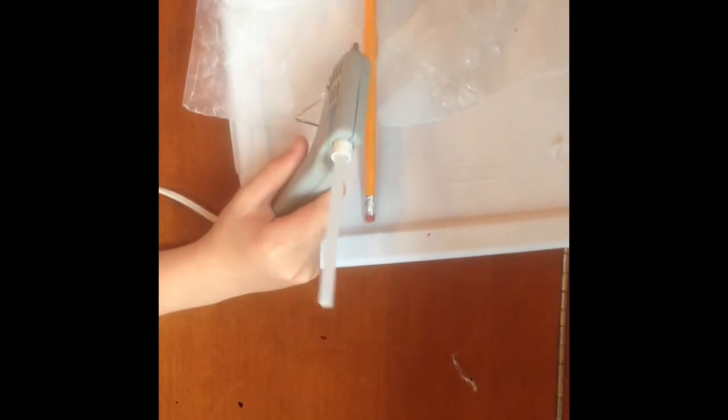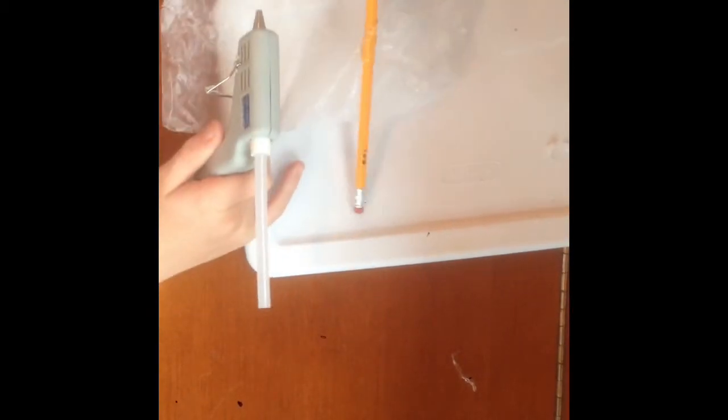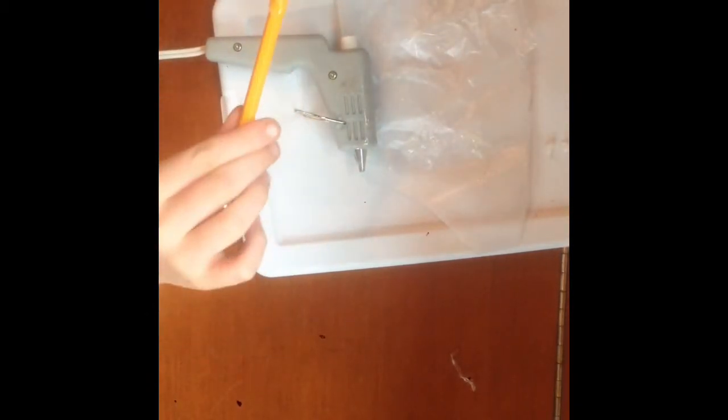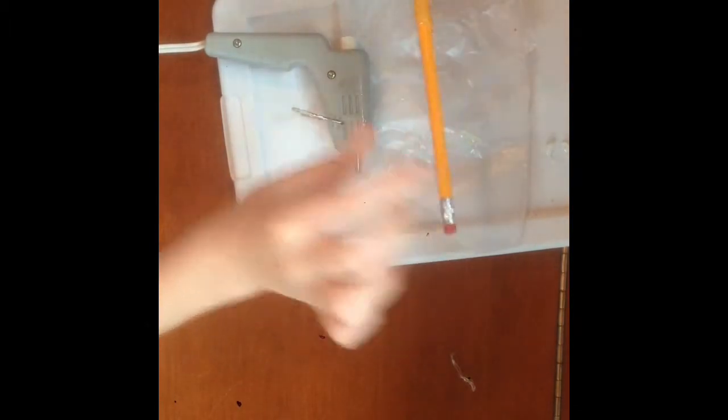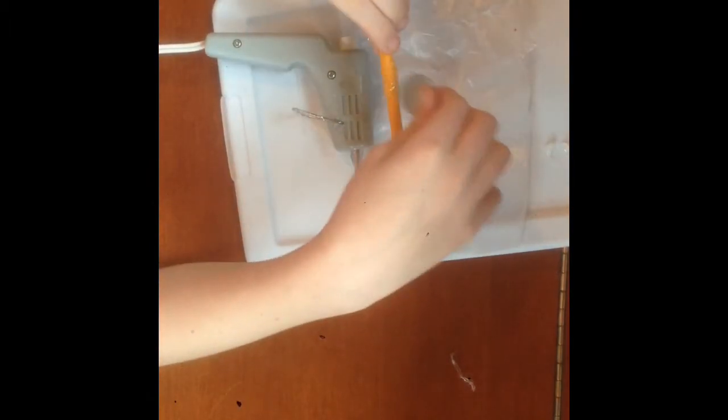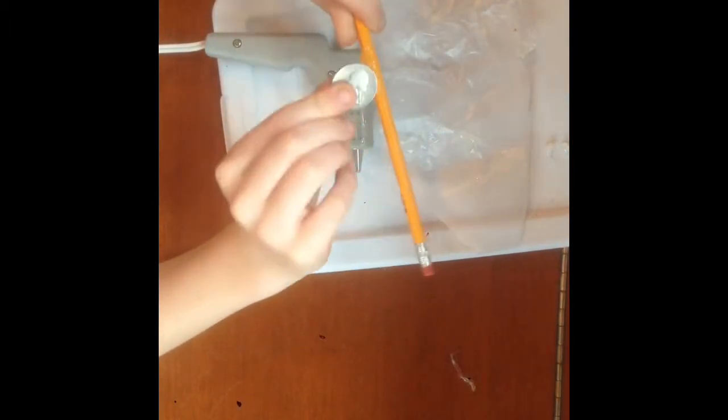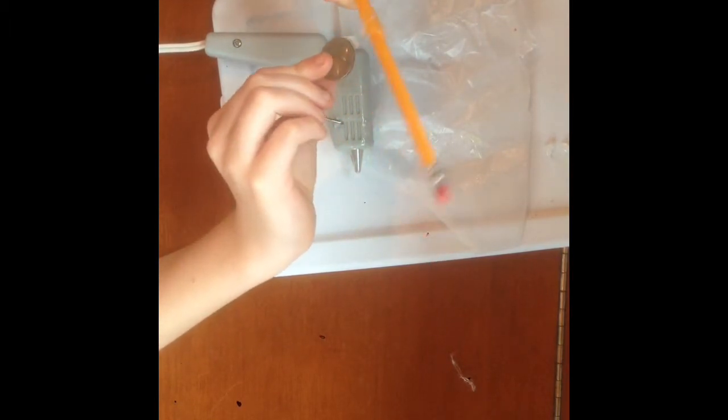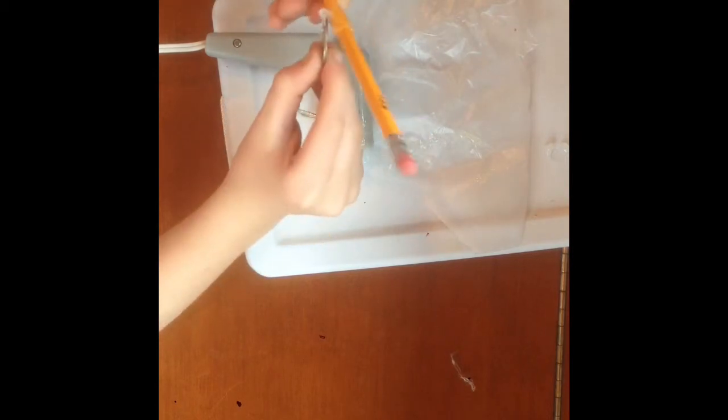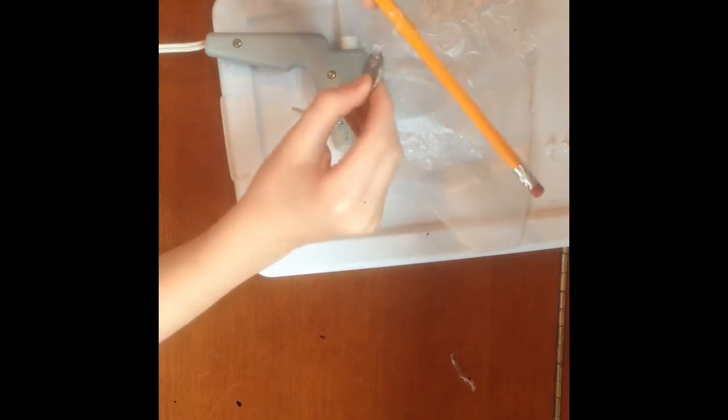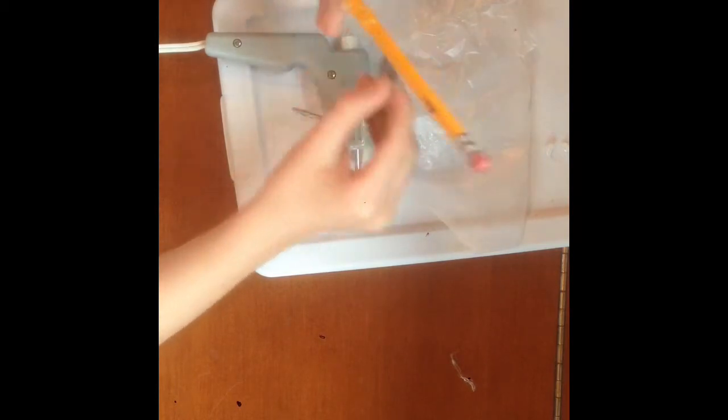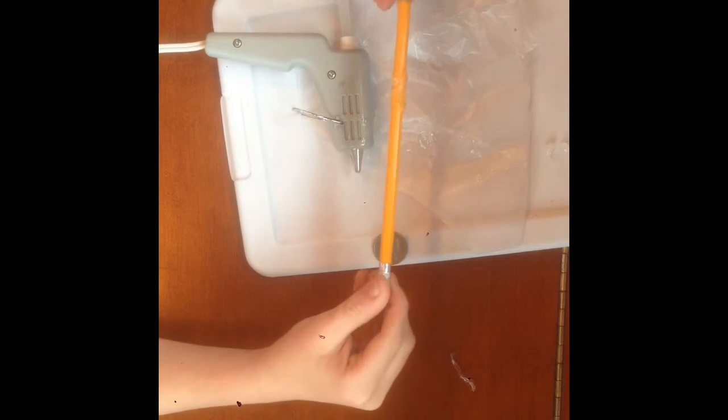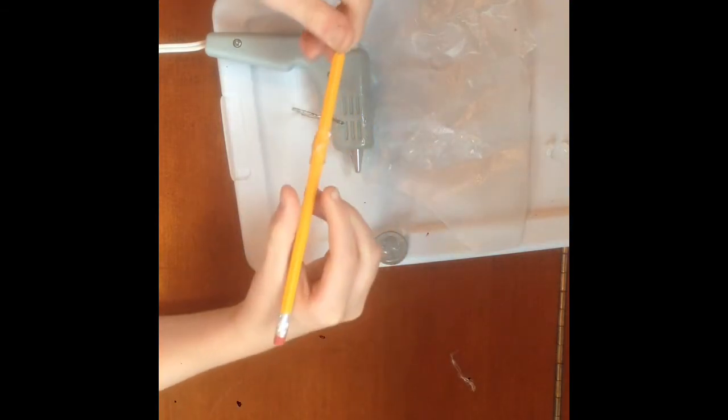When you have your glue around the whole thing, try to smooth it out with anything you want. For mine, I'm going to use a quarter. Try to make it smooth so it feels good in your hand. Be careful because it might be hot, so try not to use your hands. Once you have it as smooth as you want, you're done. Just make sure it's dried.